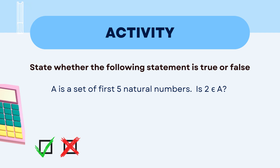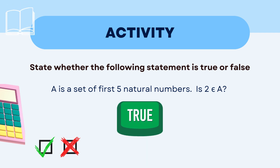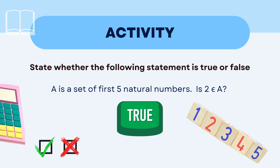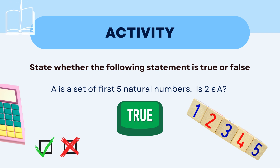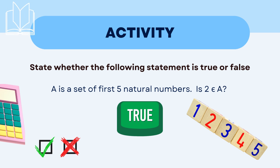Is 2 represented in A or not? The answer is true because the first five natural numbers are 1, 2, 3, 4, and 5. So yes, element 2 is a member of the first five natural numbers.